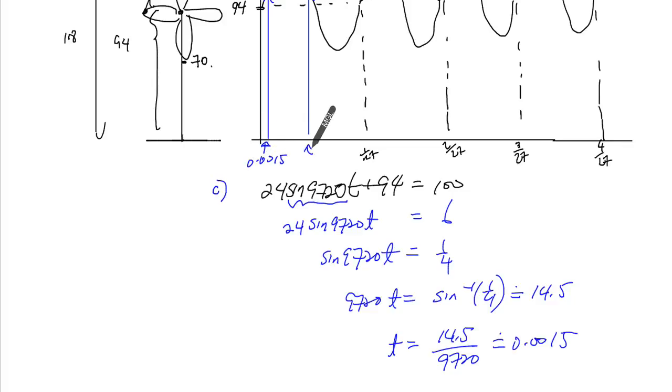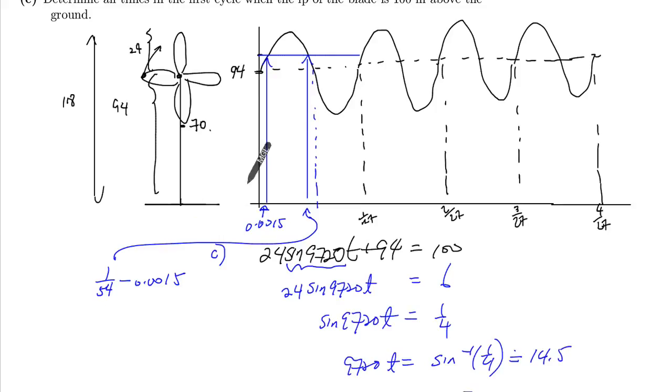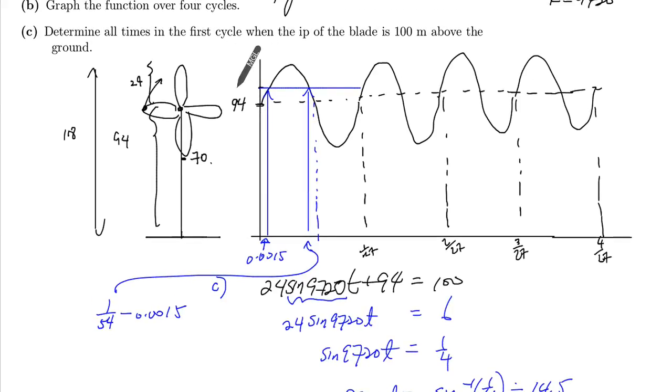And this one right here is going to be... see this middle here? That's exactly half of this. So let me just bring it here. Half of that is 1 over 27 times by 2, which is 54. And you got to minus 0.0015. So this value and this value, that's when the height of the blade is going to be exactly 100.